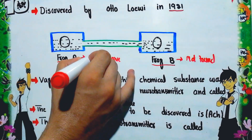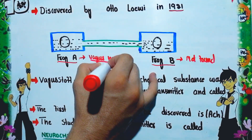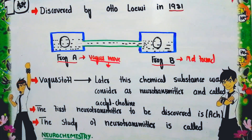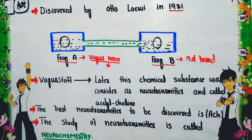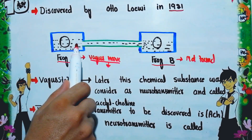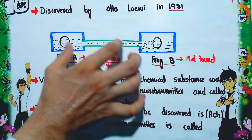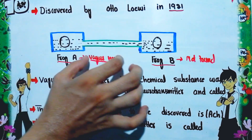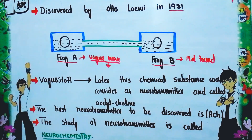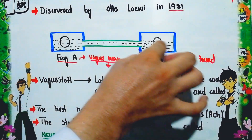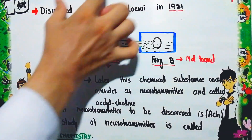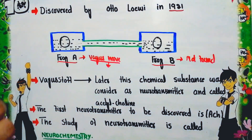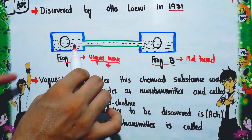When the vagus nerve of Frog A was electrically stimulated, the heart rate of Frog A slowed down. The two chambers were connected so that fluid from one chamber transferred to the other. After some time, the heart rate of Frog B also slowed down.